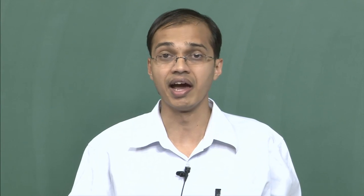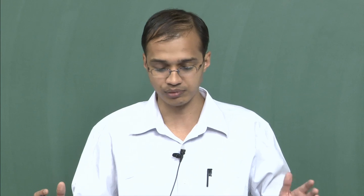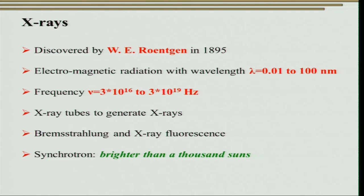Let us first review the basics of X-ray diffraction. X-rays were discovered by W.C. Röntgen in 1895. They are electromagnetic radiation with wavelength of the order of 0.01 to 100 nm and frequency of 3×10¹⁶ to 3×10¹⁹ Hz. X-rays are generated using X-ray tubes, which produce bremsstrahlung as well as characteristic X-ray peaks. Optics are used to separate the bremsstrahlung from the characteristic X-rays for conventional X-ray diffraction studies. We will also study how X-rays interact with matter to give us important information.